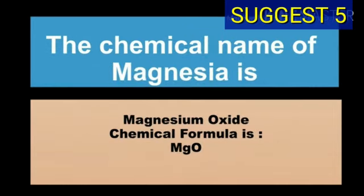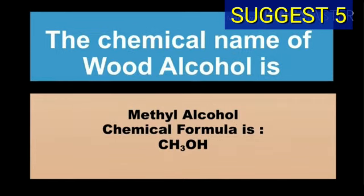The chemical name of magnesia is magnesium oxide and chemical formula of magnesia is MgO. The chemical name of wood alcohol is methyl alcohol and chemical formula is CH3OH.